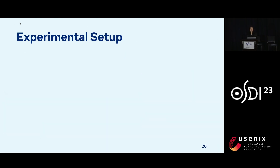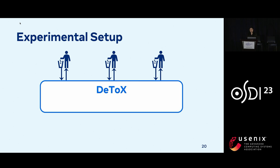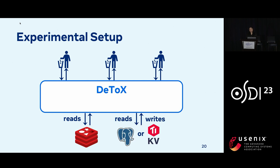I'll briefly describe our experimental setup before moving on to results. All application clients interface directly with Detox, which mediates access between the cache and the database. For our caching system, we support Redis, and we send all reads first to Redis, with all read misses as well as writes going to the database — for which we support Postgres and TiKV. We use two-phase locking to ensure serializability between the cache and the database.